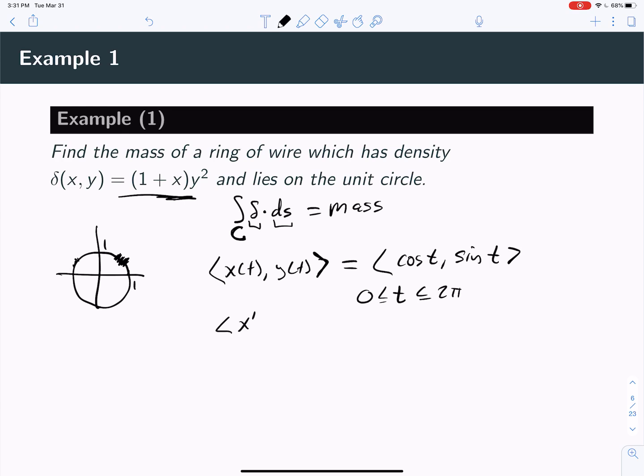And that would mean that x'(t), y'(t) would be negative sine t, cosine t. So this is my position vector r, and this would be my velocity vector r'.